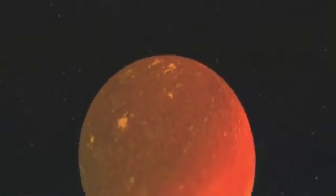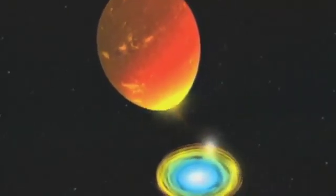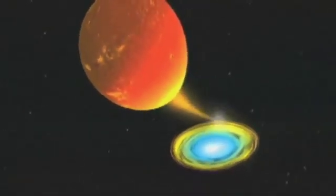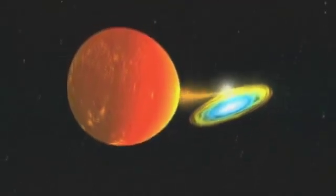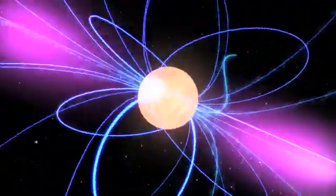Each X-ray binary is made up of a normal star and a star which has passed beyond the end of its life. These companions are exotic things, most commonly a neutron star, but sometimes a black hole.